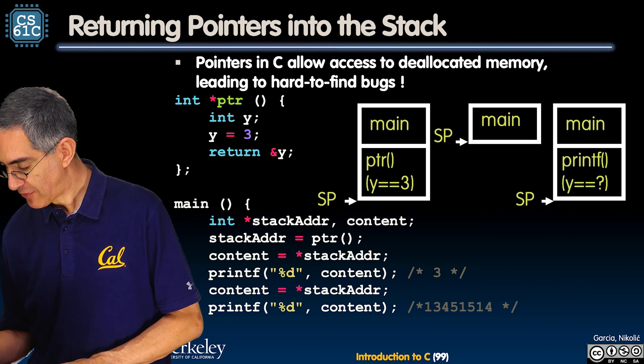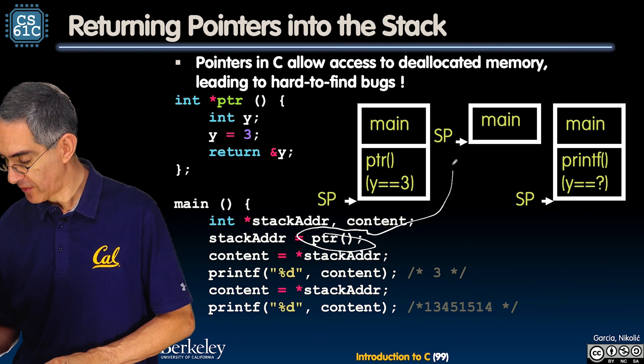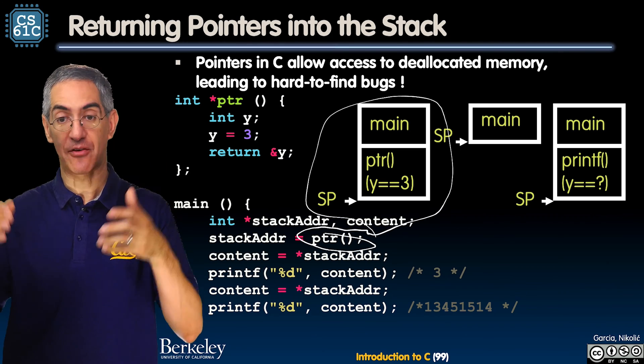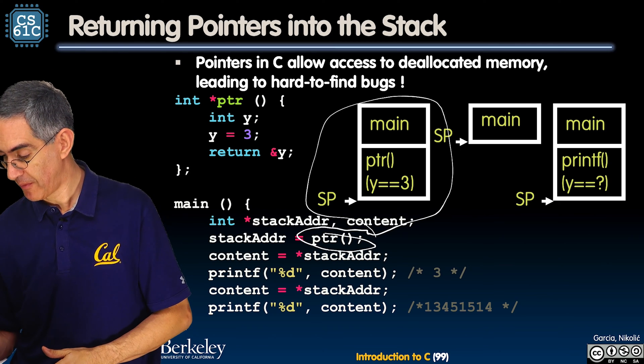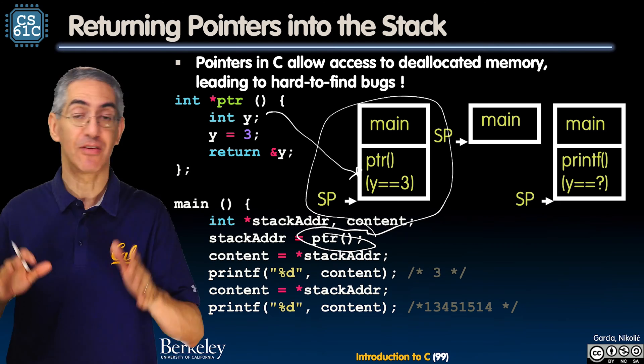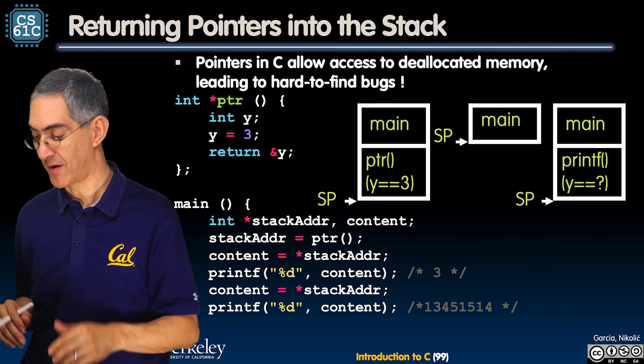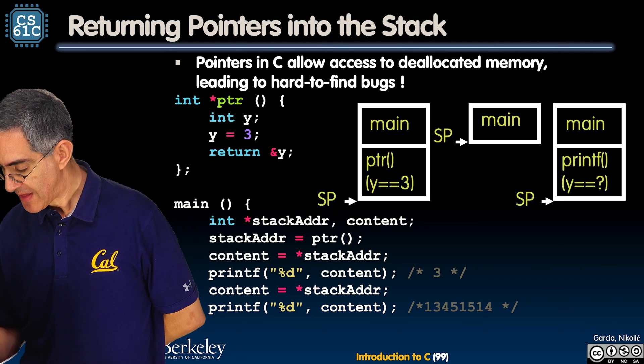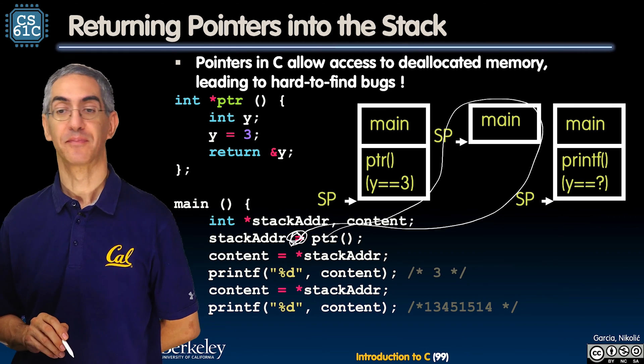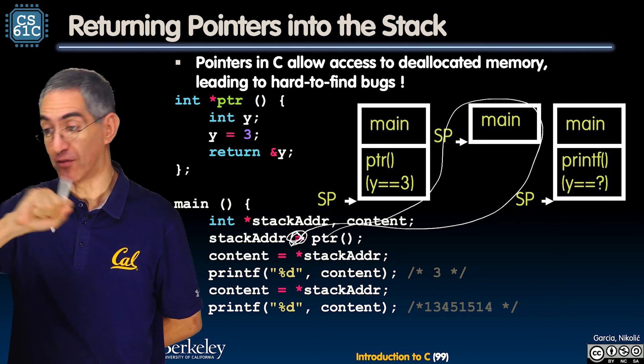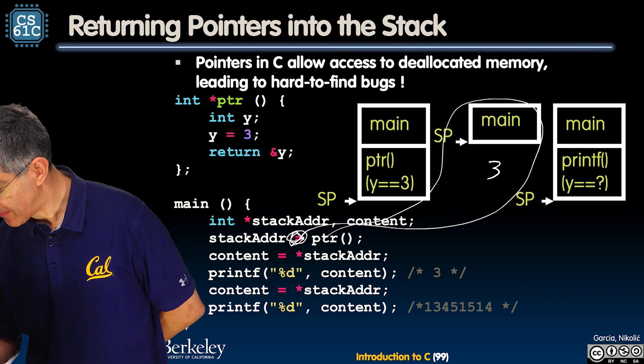Here is the pointer stack address and here's the content. Content is going to contain the three. So let's try it. Stack address equals pointer. While this is running, this is what the world looks like. Main has its stack frame and pointer has its stack frame. Everything's good. And in pointer was Y, because Y is a temporary variable. Y lives right in there.